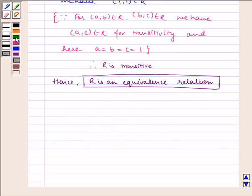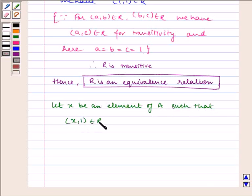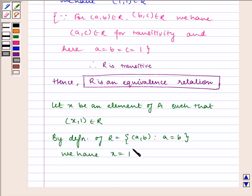Now, let us do the second part. Let x be an element of A such that (x,1) belongs to R. Then, by definition of R equals {(a,b): a equals b}, we have x equals 1.